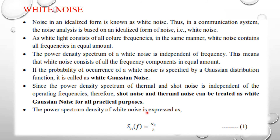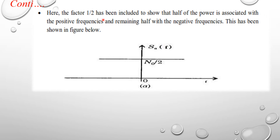The spectral density of white noise is expressed as S_n(f) = N₀/2, where the factor 1/2 is included to show that half of the power is associated with positive frequencies and the remaining half with negative frequencies. This is shown in the power spectrum density diagram where N₀/2 is the flat spectrum density extending over both positive and negative frequencies.